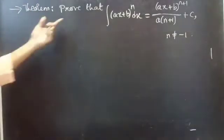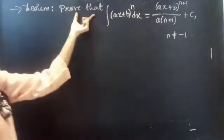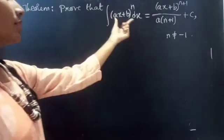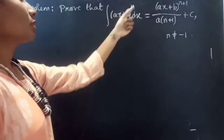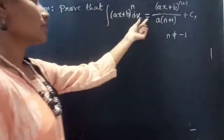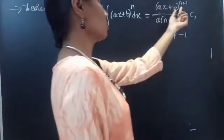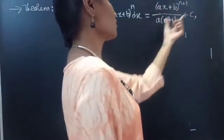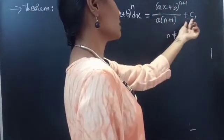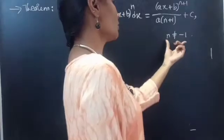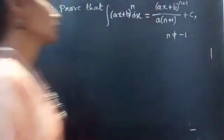Theorem statement. Prove that the integral of (Ax + b)^n dx equals (Ax + b)^(n+1) divided by A(n+1), plus the constant of integration C, for n not equal to minus 1.